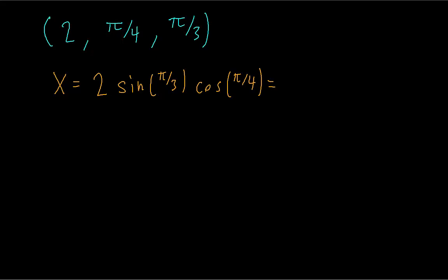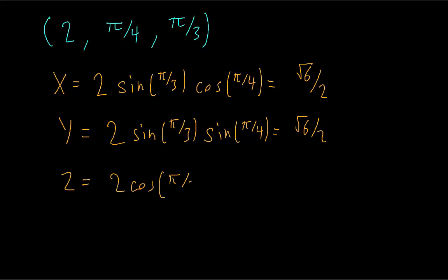And then y is the same thing but with sine of theta. So since theta is pi fourths, it's going to be the same as the x coordinate. And then z is going to be rho times the cosine of phi. So this is the point in rectangular coordinates.